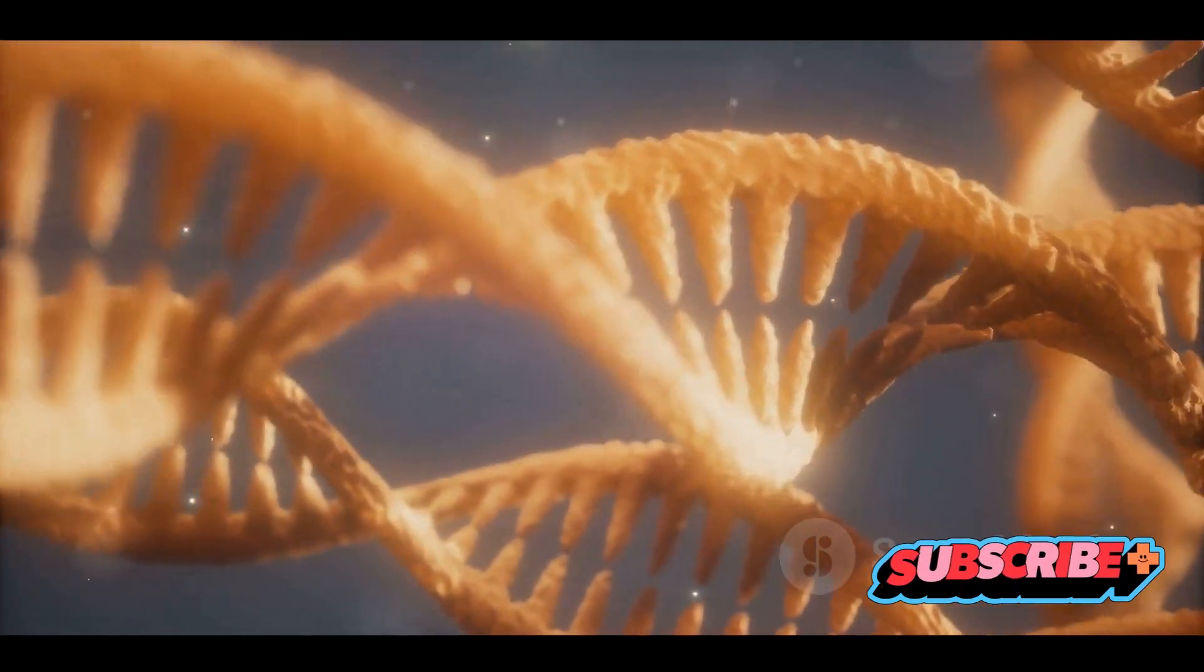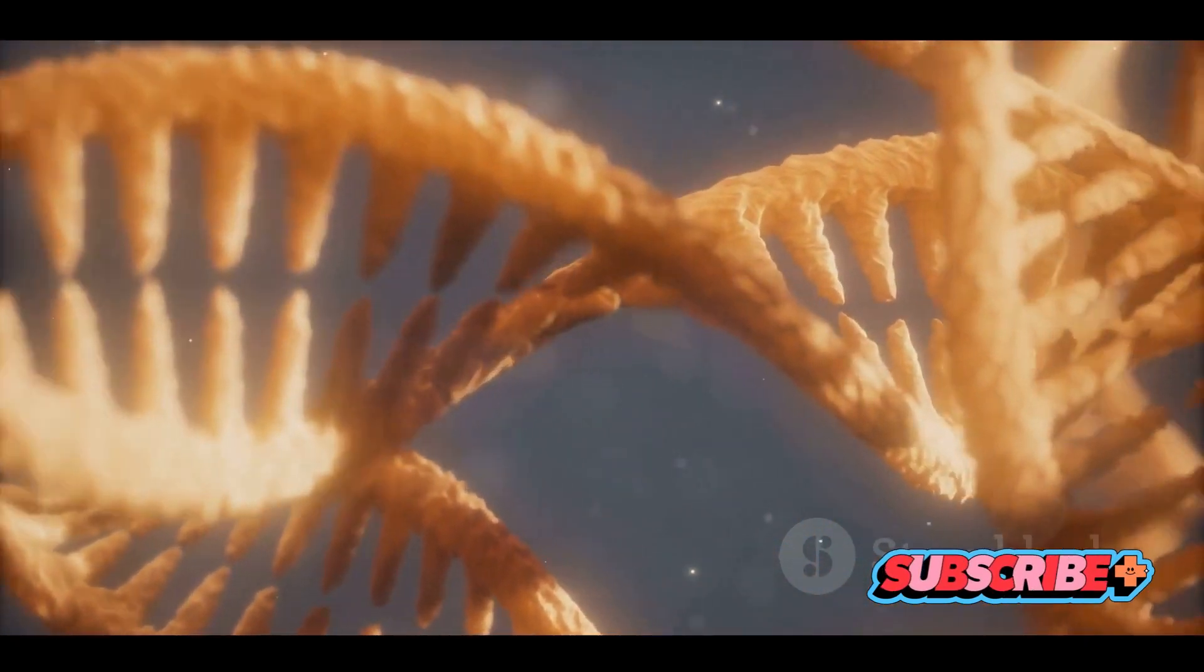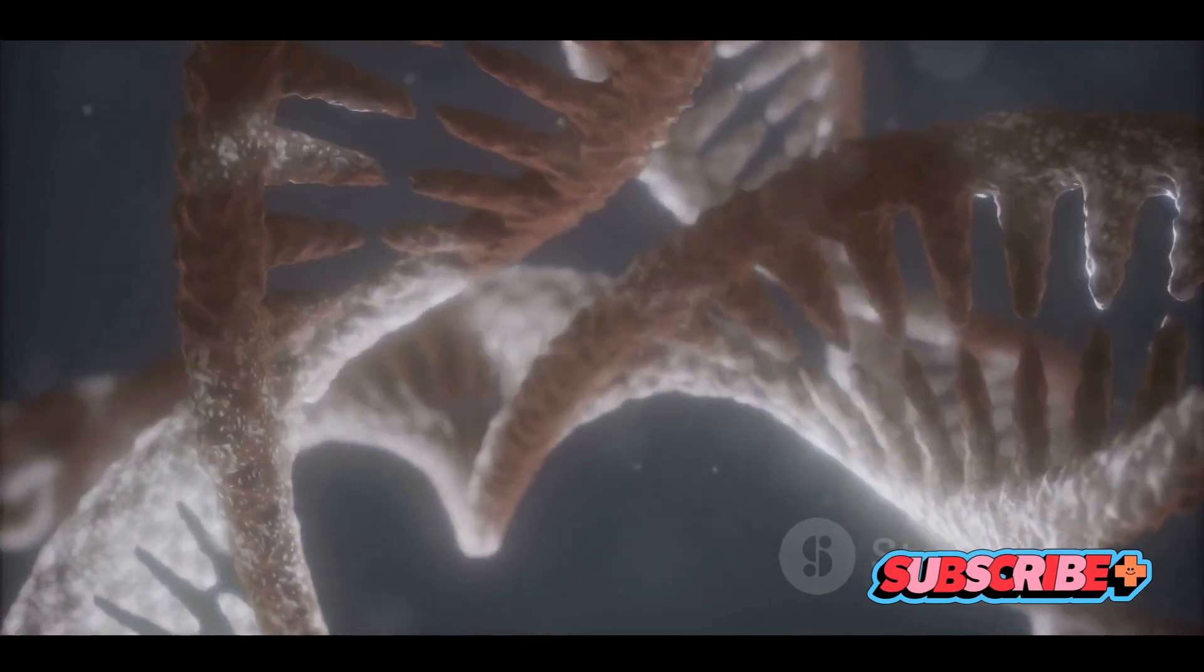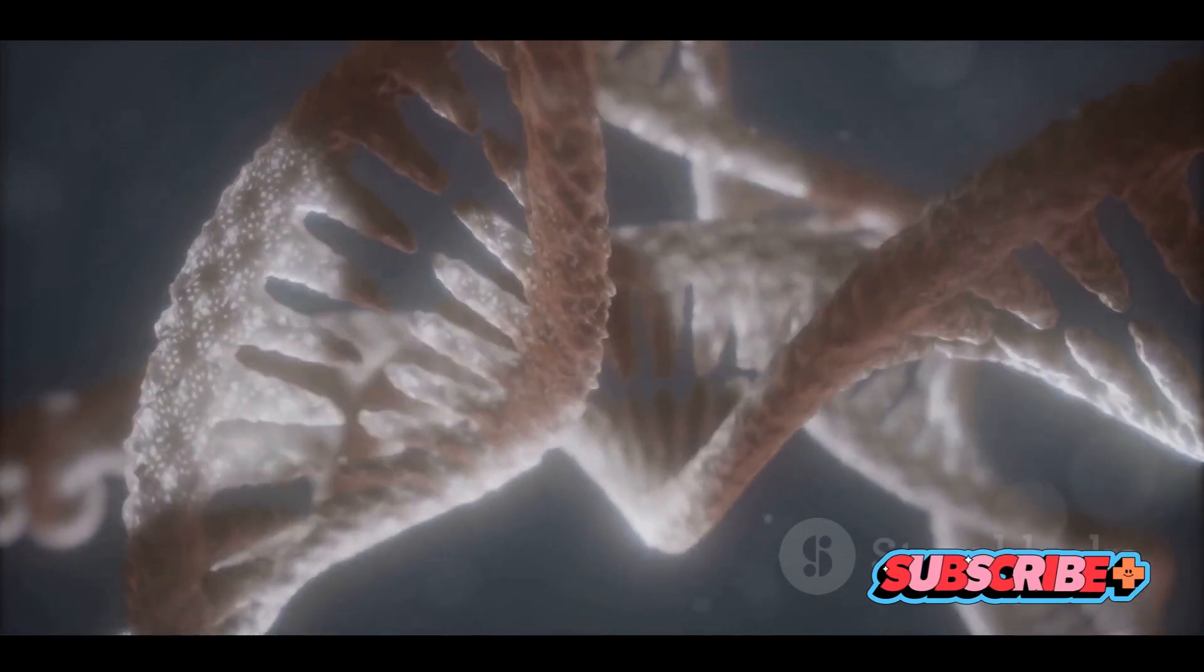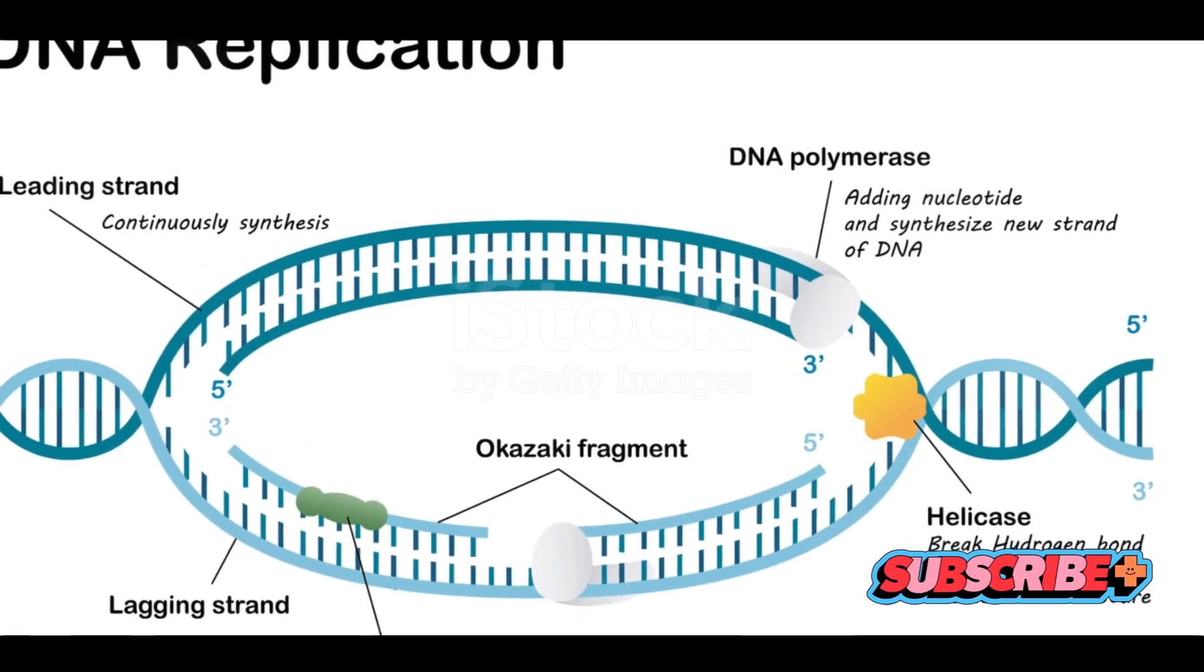As each new base is added to the growing strand, it naturally seeks out its complementary pair on the template. Adenine finds thymine, guanine finds cytosine, and so forth. This replication ensures each new cell receives an identical set of genetic information.